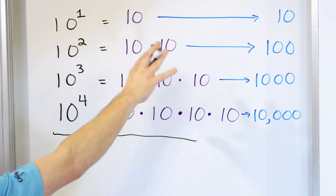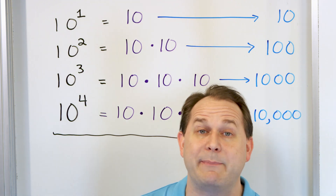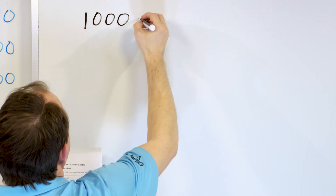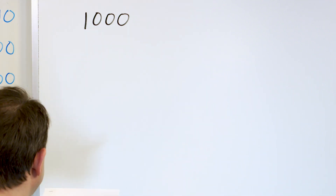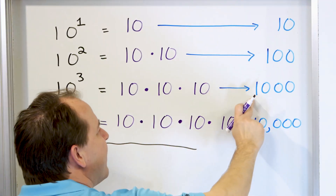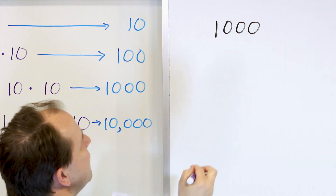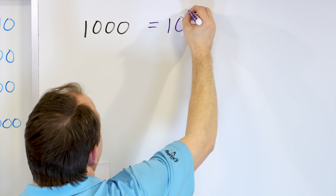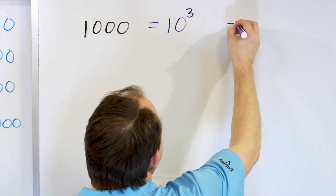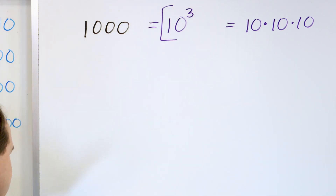Now that we know what powers of 10 really mean, let's do a few problems. Problem number one: convert the number 1,000 to a power of 10. The pattern here is that 1,000 is just 10 to the power of 3, because there are three zeros at the end. It's the same as 10 times 10 times 10. So the answer is 10 to the power of 3.